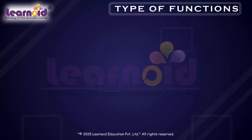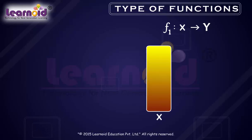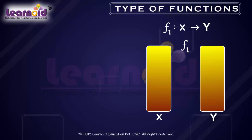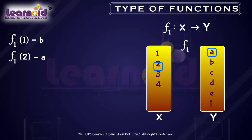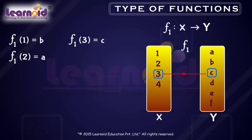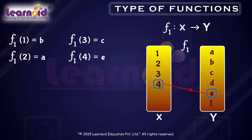Let us consider a function f1 from X to Y such that images of distinct elements of X under f are distinct. Image of 1 under f1 is b. Image of 2 under f1 is a. Image of 3 under f1 is c. Image of 4 under f1 is e. No two elements of X have the same image.